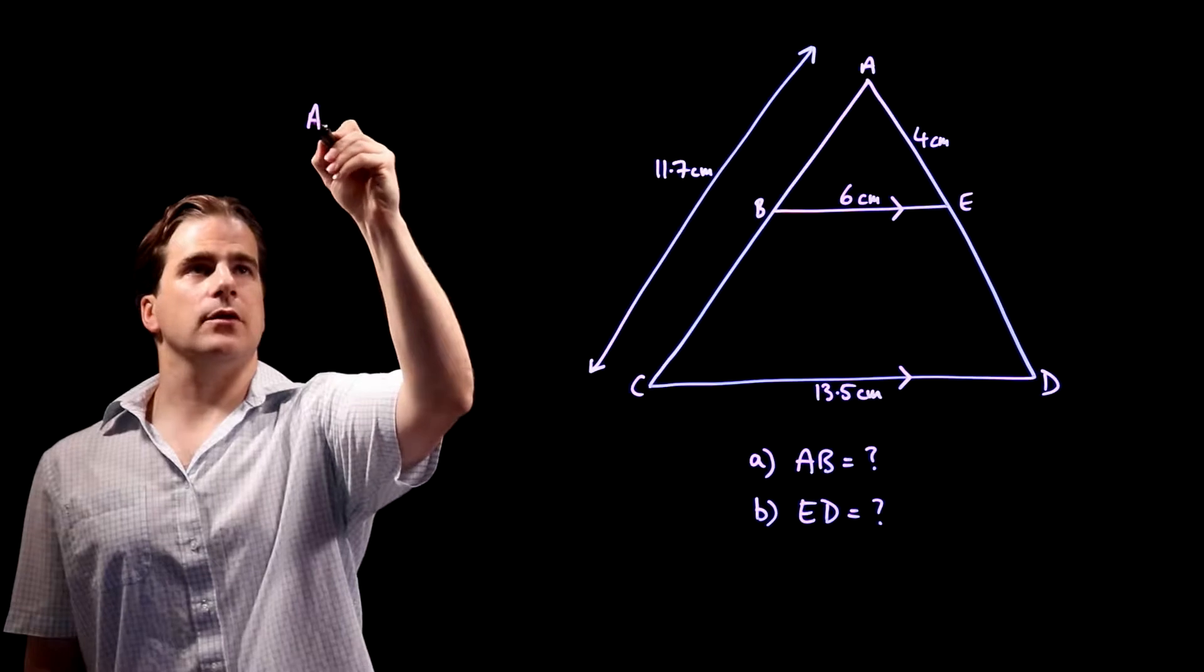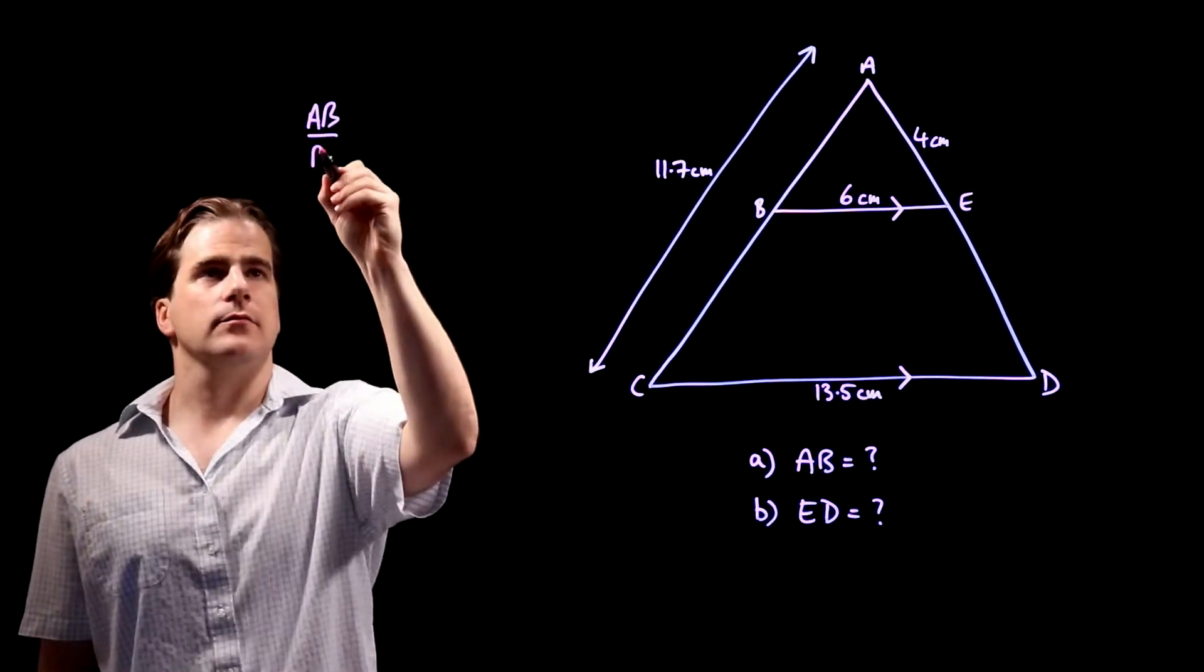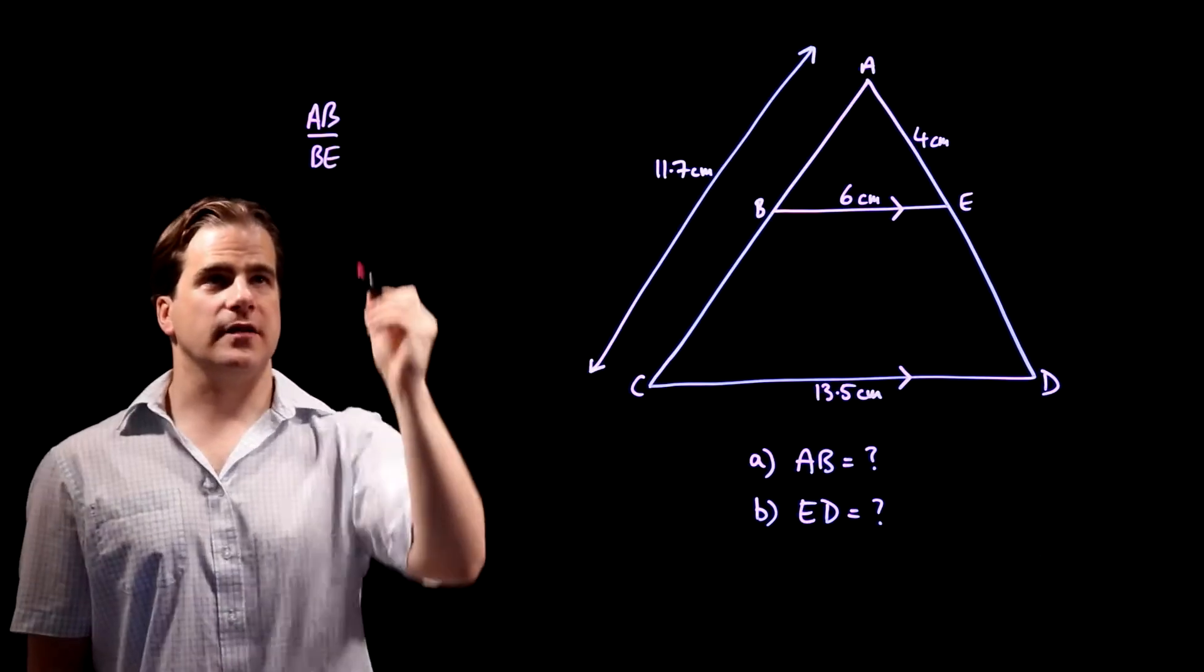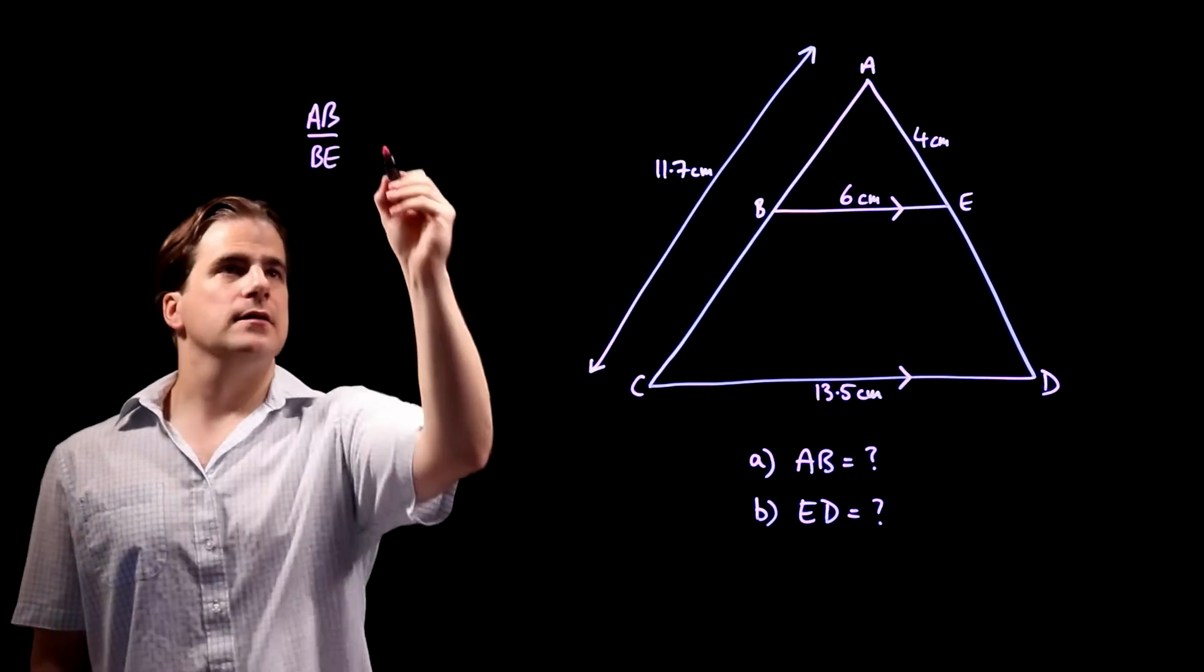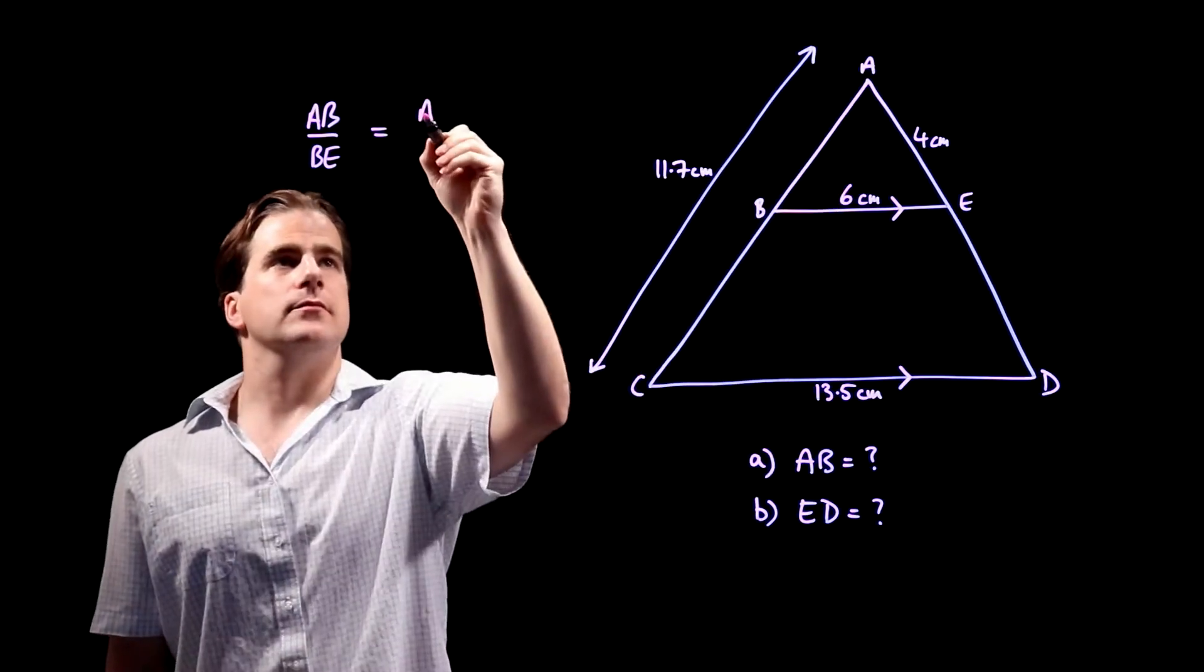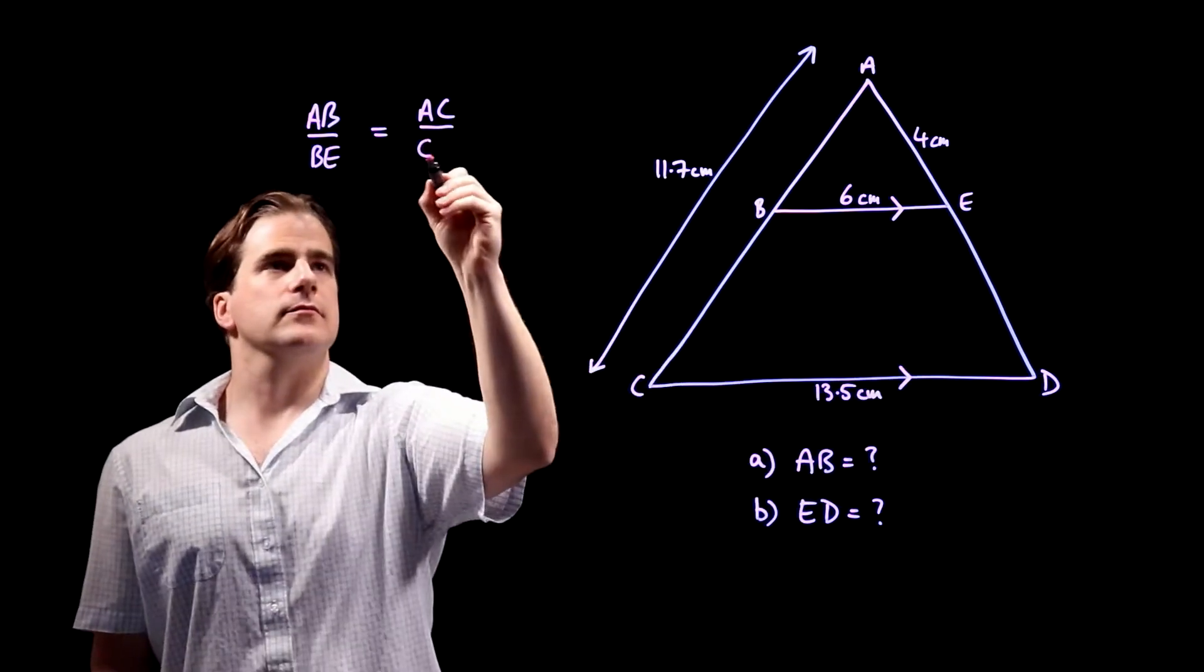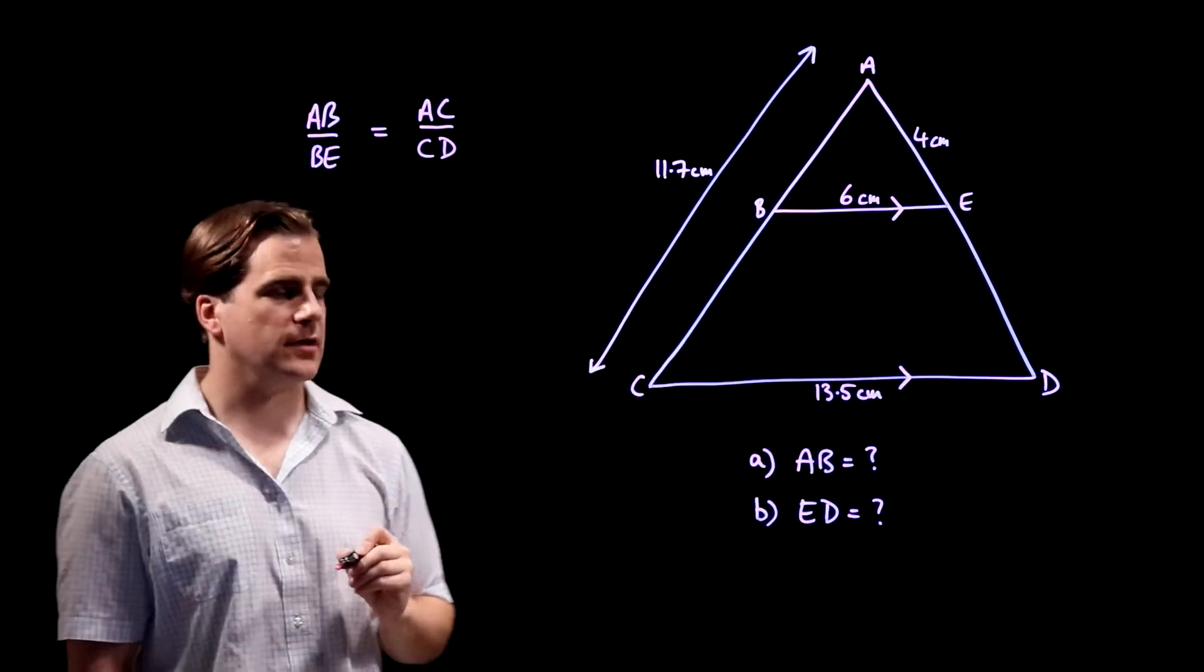The ratio of AB to BE, in other words AB divided by BE, is the same as AC to CD.